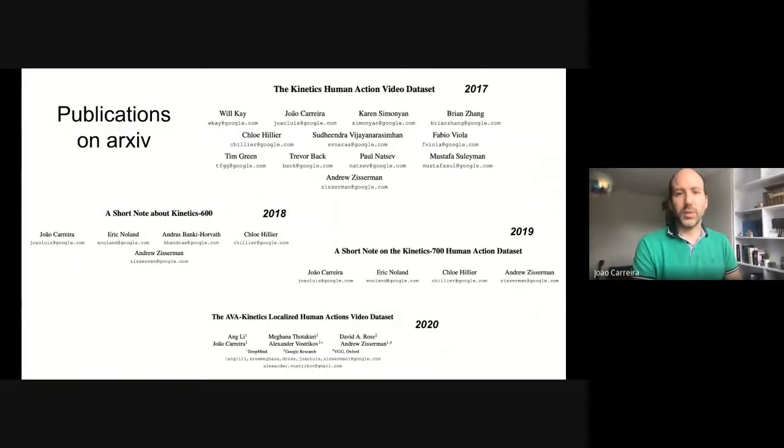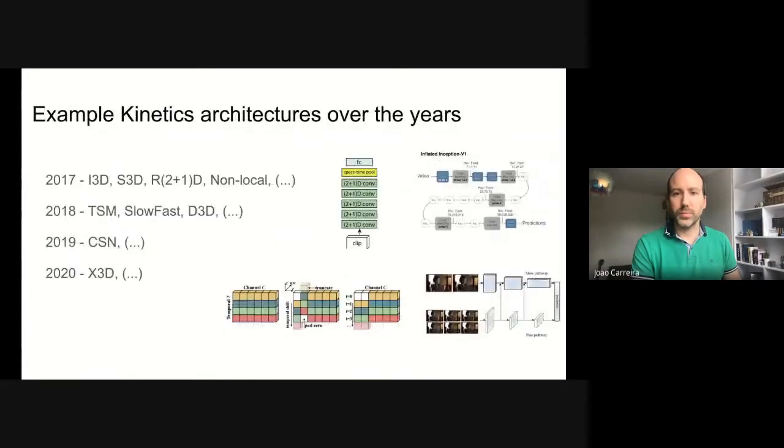Details about each of these datasets, how they were collected, number of examples, load of classes, etc. can be found on Archive. Kinetics has had a tremendous impact. Dozens of new architectures have been developed and tested using the Kinetics data, which led to large improvements in most downstream tasks, from UCF 101, to HMDB51, to Charades, AVA, ActivityNet, etc.